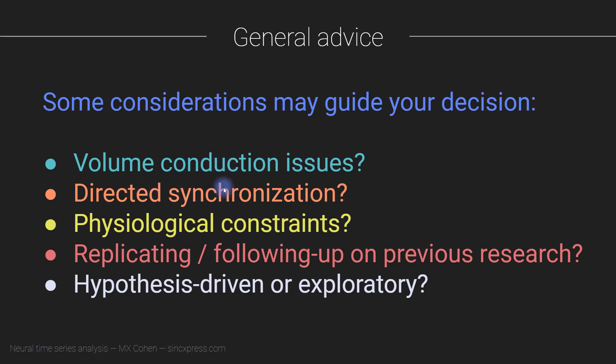Do you want directed synchronization like Granger causality, or are you happy with a symmetric measure of synchronization? Are there some physiological constraints? By this I mean, are there neuroscientific theories that are guiding your choices? You can draw on your theoretical understanding and your predictions, your hypotheses about what's happening in the brain, and then let that guide your decision for what analysis you should do.